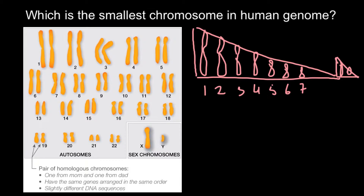Sex chromosomes are set apart not depending on their size, but because these two chromosomes define sex. As you can see, the Y chromosome is pretty small. So which one is smaller — chromosome number 22 or the Y chromosome?